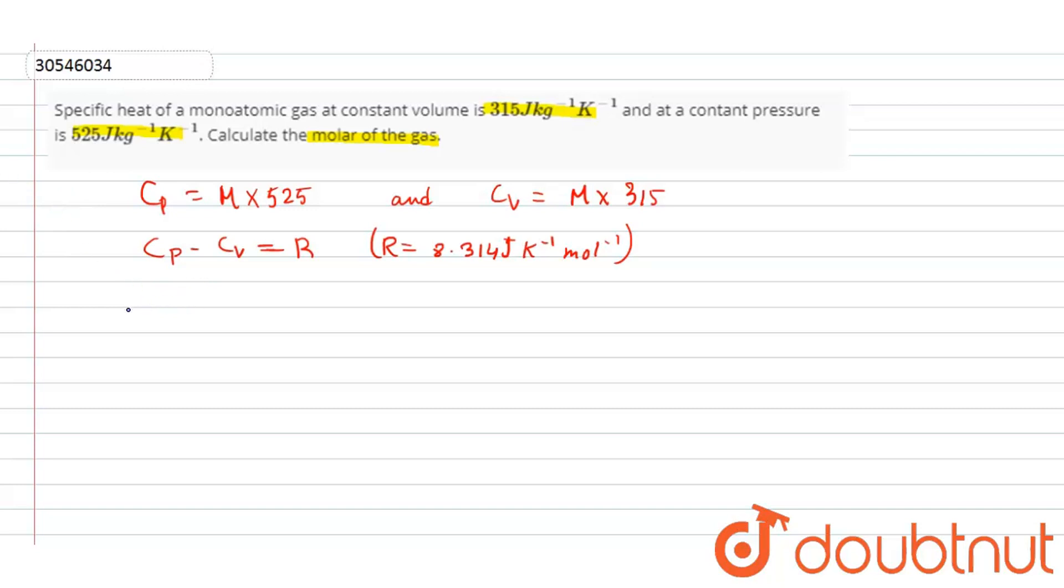Now, we know that R is equal to 8.314. So, M times 525 minus M times 315 equals 8.314.